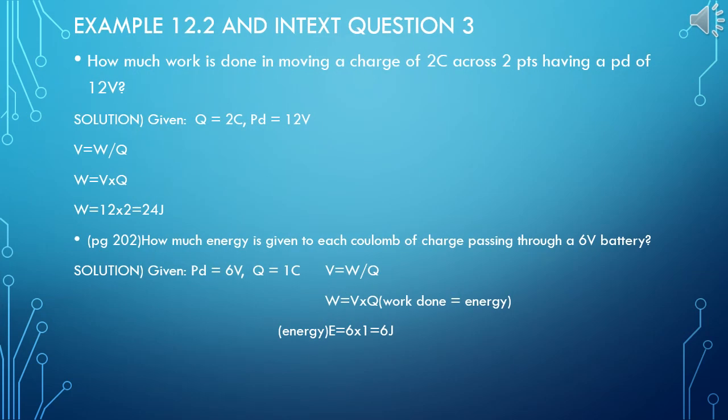Let us understand some examples. I have given example 12.2 and index question number 3. The first question, example 12.2: how much work is done in moving a charge of 2 coulomb across 2 points having a potential difference of 12 volts? Let us go for a solution. Write first given: Q, that is charge, that is equal to 2. Potential difference, that is equal to 12 volts. And already you know the formula V is equal to W by Q, that is W is equal to V into Q. Substitute the given V is 12 and Q is 2. 12 twos are 24 joules.